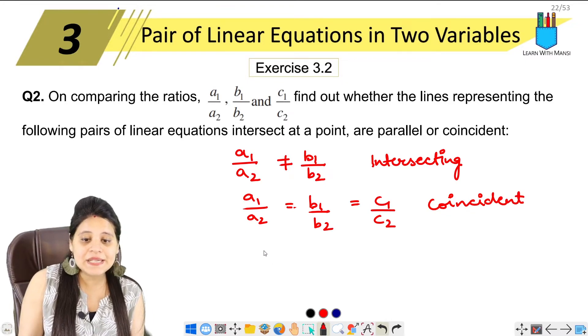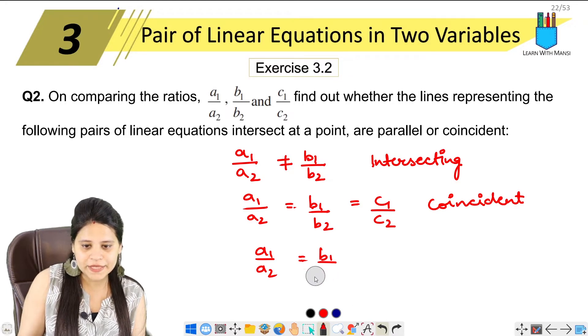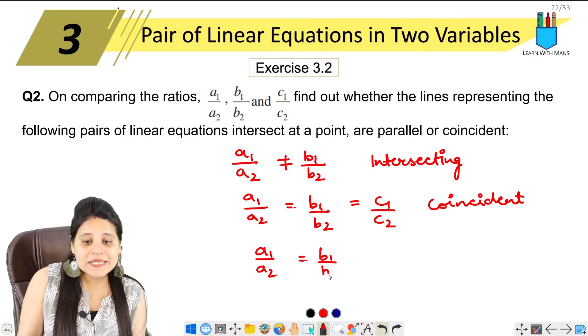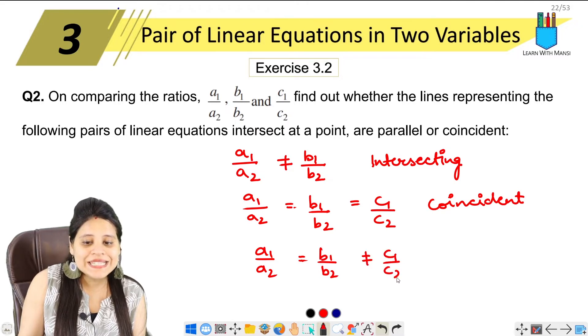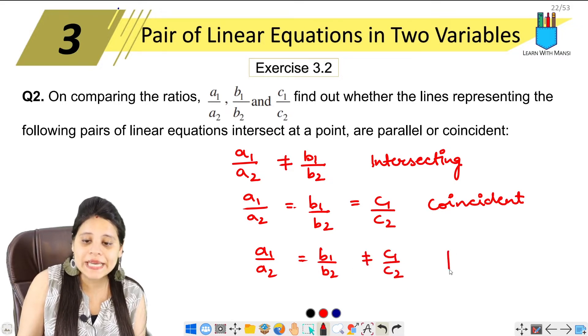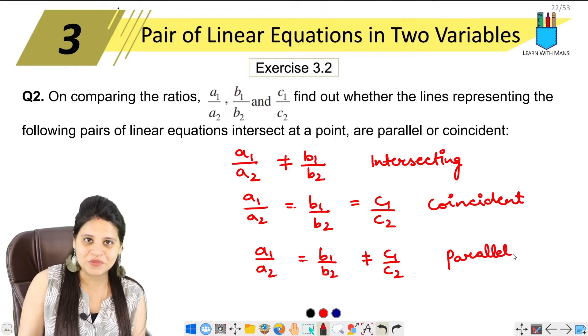Now next we have, if a₁ upon a₂ is equal to b₁ upon b₂, but not equal to c₁ upon c₂, so we will say that in this case, the lines are parallel in the graph.